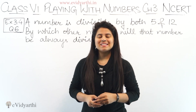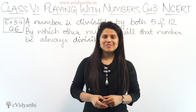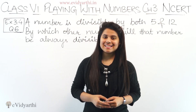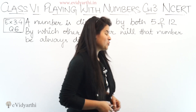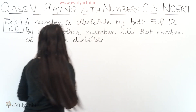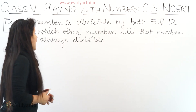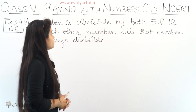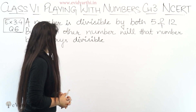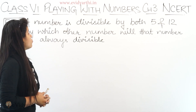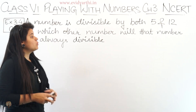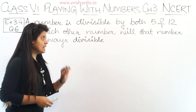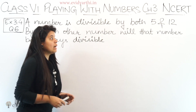Hi everyone, this is Manzi from Evithati Chorj, coming to question number 6, exercise 3.4. In this question we have: a number is divisible by both 5 and 12. By which other number will that number always be divisible?